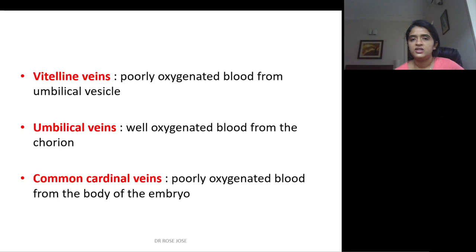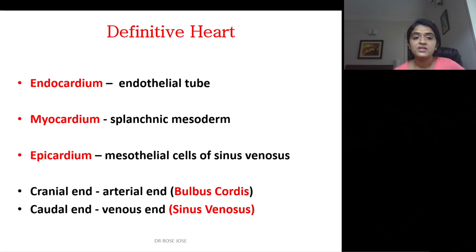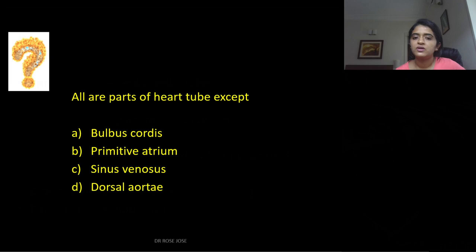The definitive heart is derived from two endothelial heart tubes. The endocardium is derived from the endothelial heart tube lining. The myocardium comes from the surrounding splanchnic mesoderm, and the epicardium from the mesothelial cells of the sinus venosus. The heart tube has a cranial (arterial) end — the bulbus cordis — and a caudal (venous) end — the sinus venosus. All parts of the heart tube include the bulbus cordis, primitive atrium, and sinus venosus.